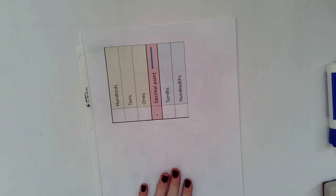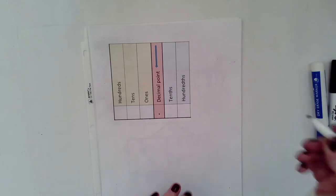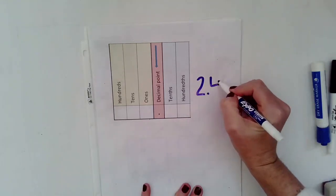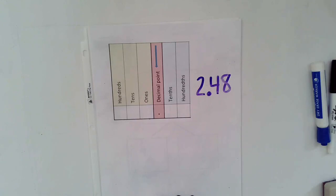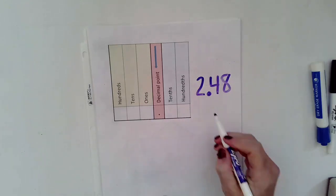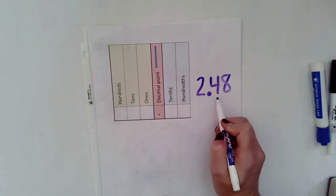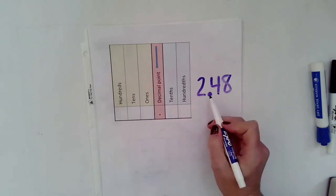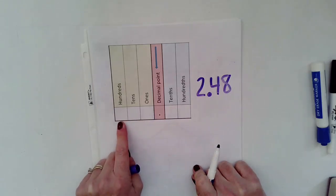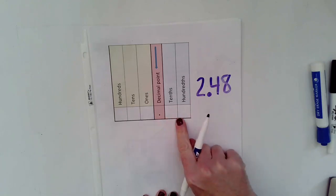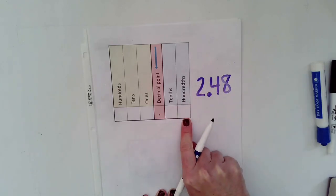Before we get started, we're going to use a place value chart to help us understand these decimals. Any number that is to the left of the decimal point is a whole number. Anything to the right, such as the tenths place or the hundredths place, is going to be part of a whole.